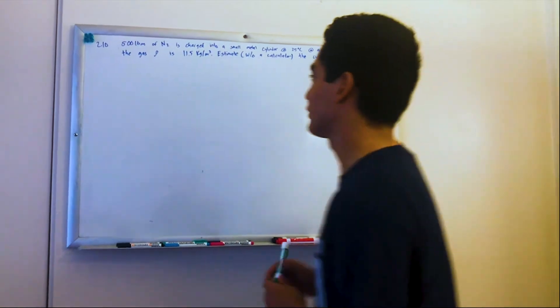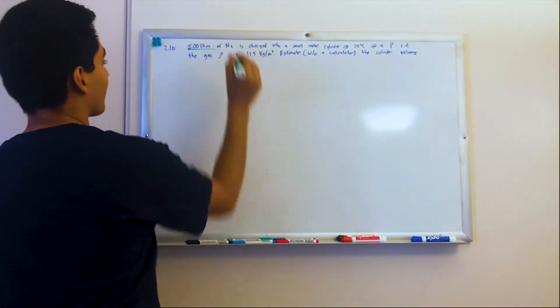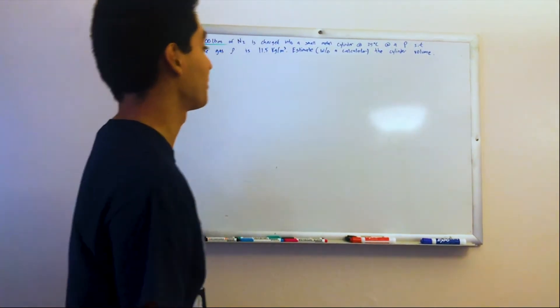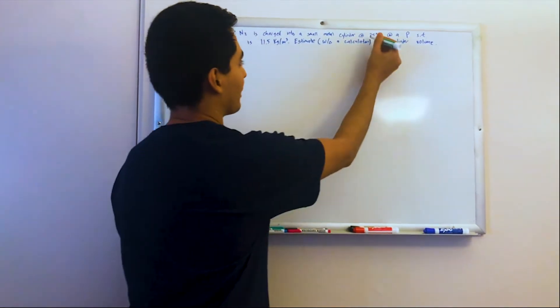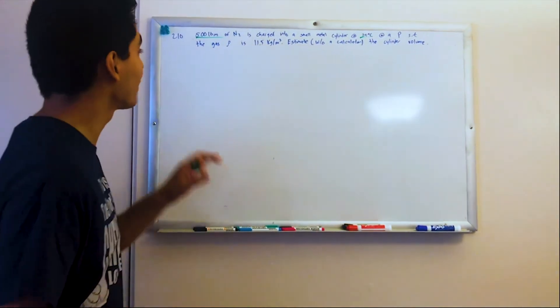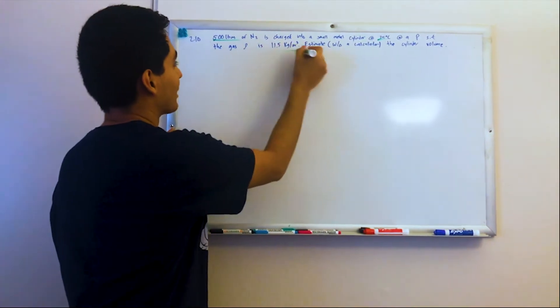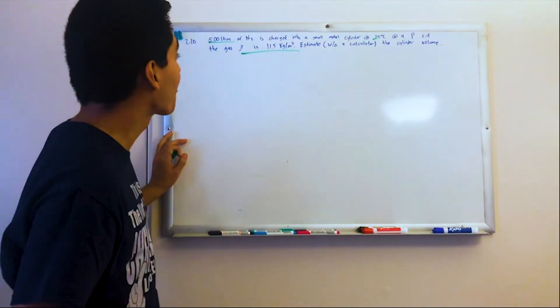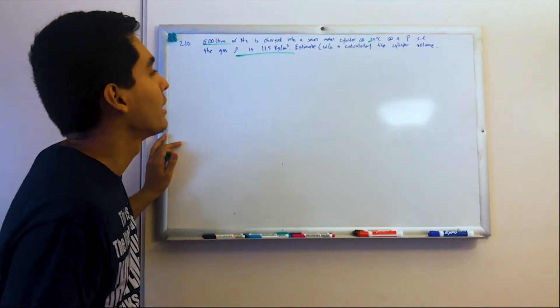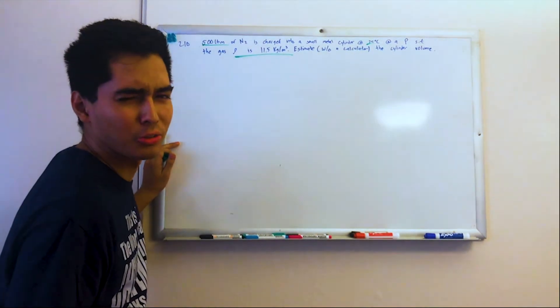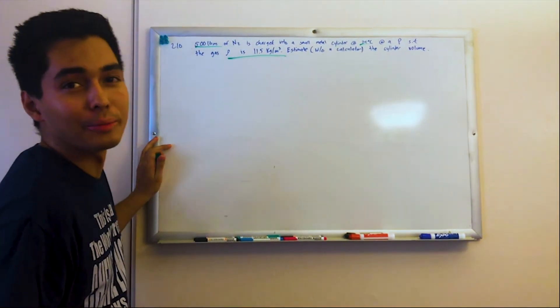500 pound mass nitrogen is charged into a small metal cylinder at 25 Celsius under pressure, such that the gas density is 11.5 kilograms per meter cubed. And we need to estimate, without a calculator, the cylinder volume.